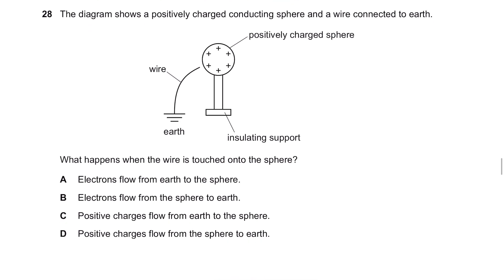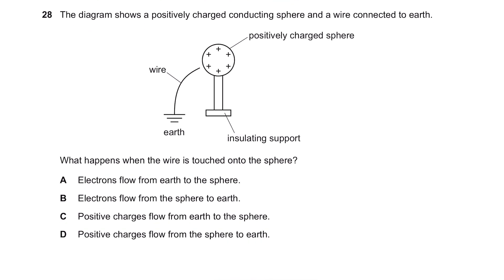Question 28. The diagram shows a positively charged conducting sphere and a wire connected to Earth. What happens when the wire is touched onto the sphere? So since this is the Earth, it's going to remove the charges on this sphere which is currently positive. While the positively charged ones do not go back to the Earth, instead, the negative ions, which are basically the electrons, will move into the sphere. And that's how you make it in a neutral state and Earth it. Therefore, from our options, the answer is that the electrons flow from Earth to the sphere.